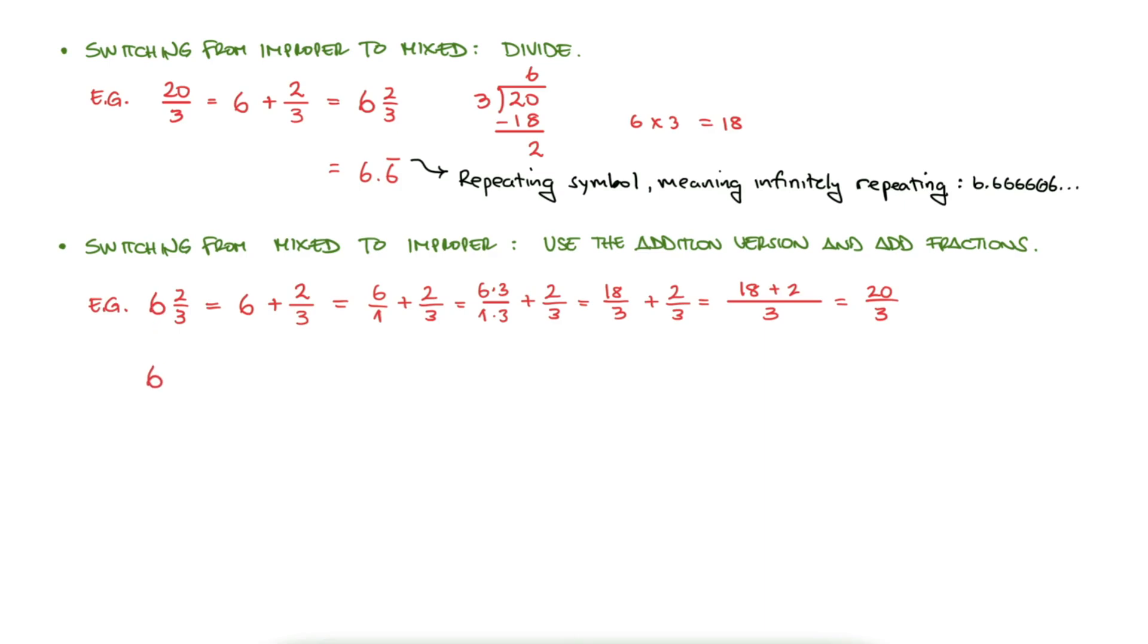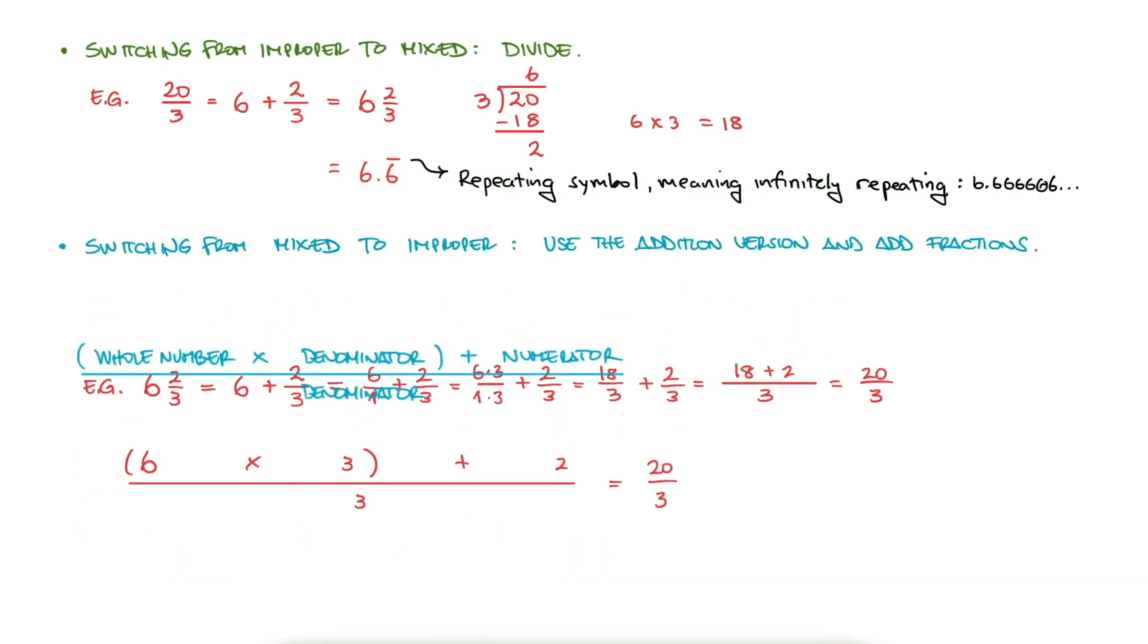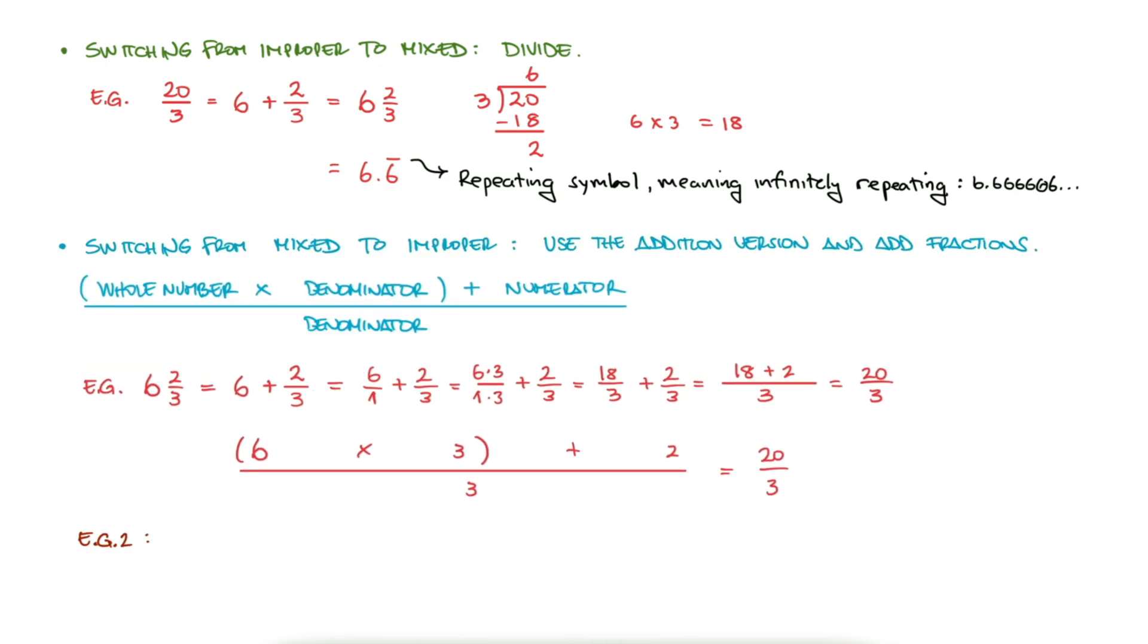The summary of this process is that we multiply the whole number by the denominator, add the numerator, and keep the original denominator. For example, 4 and 2 fifths would be 5 times 4, 20, plus 2, 22, over the original denominator, 5, or 22 over 5.